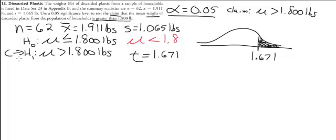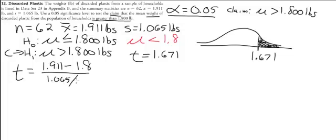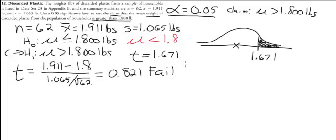We use a t-distribution again because the population standard deviation is unknown. Let's calculate the test statistic: 1.911 minus 1.8, all over 1.065 divided by the square root of 62. That gives a test statistic of 0.821, which is not in the rejection region. So we fail to reject the null.